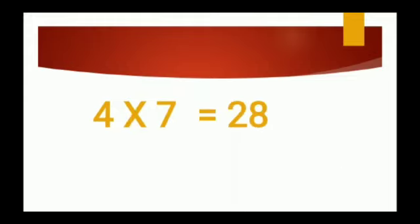4 sevens are 28. When we multiply 4 into 7, we get 28. Speak with me — what we get when we multiply 4 into 7? Yes, tell me, students. Yes, we get 28. 4 into 7 is 28.